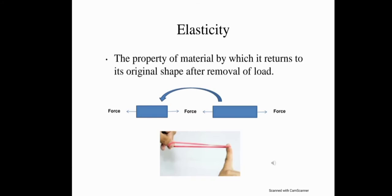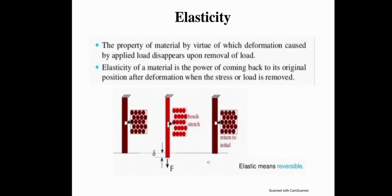Elasticity is the property of material by which it returns to its original shape after removal of load. When we exert a force on a material, the material changes from its original position, and when we remove that force, the material comes back to its original position. This property is known as elasticity. From the figure, on the left there is no force; in the middle the force is applied and the material changes position; and when the force is removed, the material returns to its original position. So elasticity is a reversible property of the material.